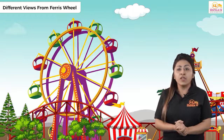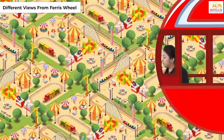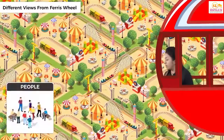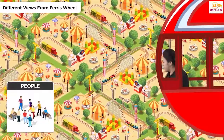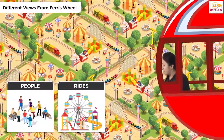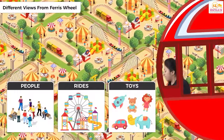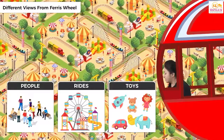When you are on the top of the ferris wheel, you can see everything below — so many people, so many rides, so many toys, and many more things.